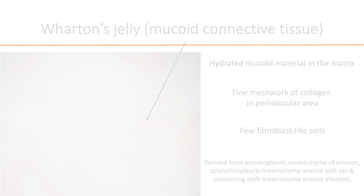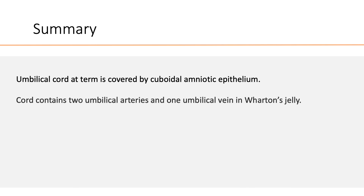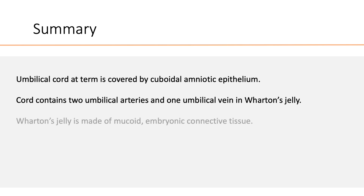To quickly recap: the umbilical cord at term is covered by cuboidal amniotic epithelium. The cord contains two umbilical arteries and one umbilical vein — usually the left umbilical vein — found in Wharton's jelly, which is made up of mucoid embryonic connective tissue.